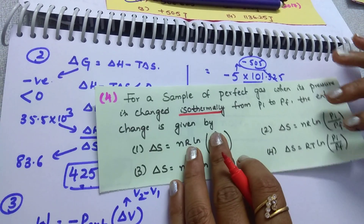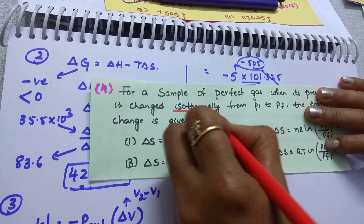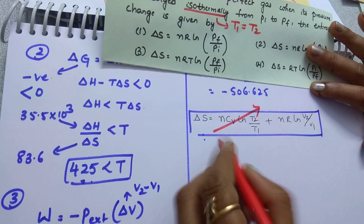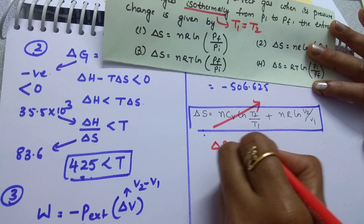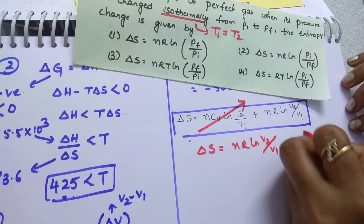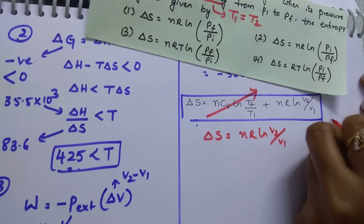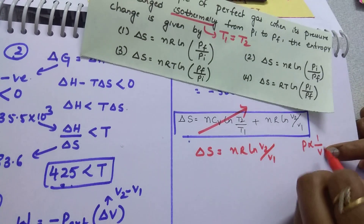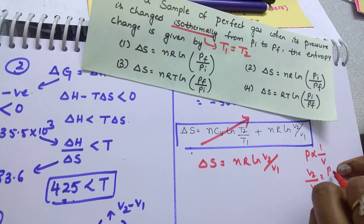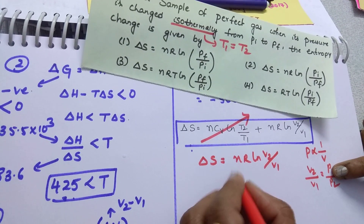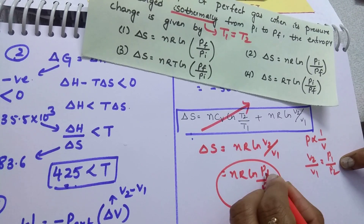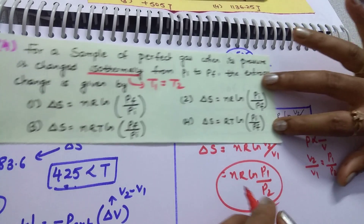For an isothermal process, temperature is constant throughout, so T1 equals T2 and the first term becomes zero. Then delta S equals N·R·ln(V2/V1). At constant temperature by Boyle's law, V2/V1 equals P1/P2. Substituting, you get delta S equals N·R·ln(P1/P2), where P1 is initial pressure and P2 is final pressure.